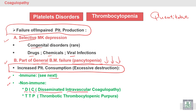The first is DIC — disseminated intravascular coagulopathy — a very severe, widespread disease involving formation of many clots inside the blood vessels and consumption of coagulation factors and platelets. The second is TTP — thrombotic thrombocytopenic purpura — thrombotic means clots, thrombocytopenic means decrease in platelets, and purpura means purple discoloration of the skin and mucous membrane.